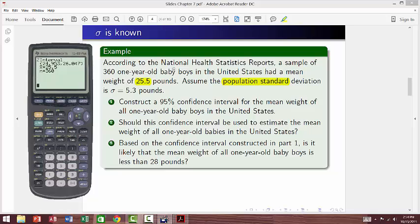So then you could ask a couple of questions here. Should this confidence interval be used to estimate the mean weight of all one-year-old babies in the United States? And the answer is no. Because this sample only contained baby boys. And the weight difference between boys and girls is actually significant. And that's something that we will be testing later in Chapter 10 when we will have two samples. So here you would say no. It should not be used to estimate the weight of all babies because the sample itself contained baby boys only.